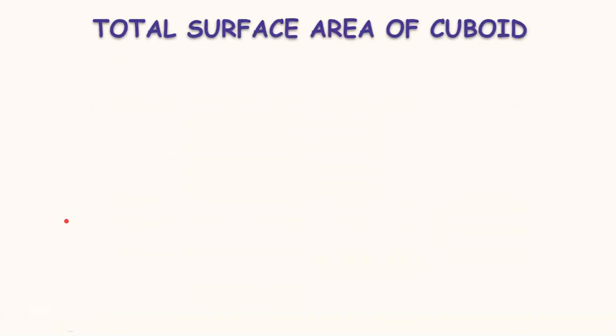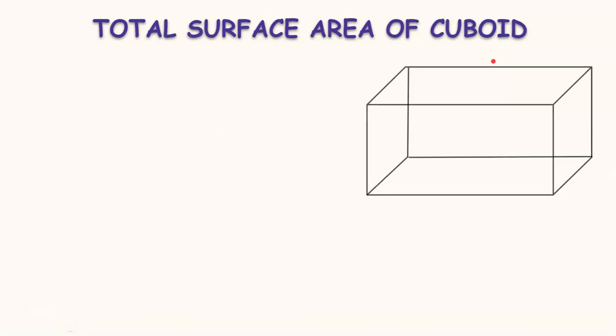Hello children, today let us find the formula for total surface area and lateral surface area of a cuboid. First, let us find the total surface area of the cuboid. For that, let us take a cuboid whose dimensions are L, B, and H.